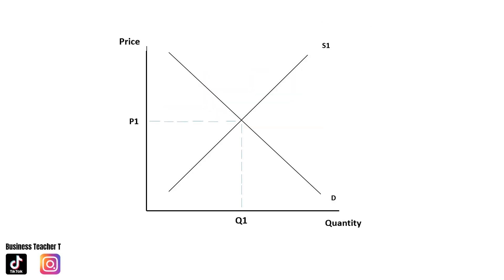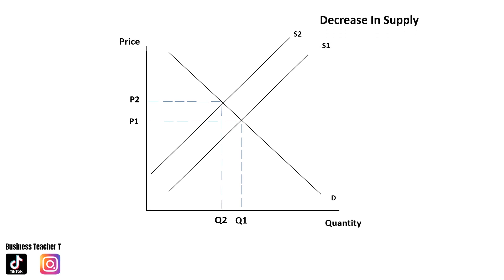For a decrease in supply, we start off with the X as we do with any demand and supply diagram — it makes it simpler and you still get marks for it. We're focusing on the supply curve, so we bring in the new supply curve shifted to the left and label it S2. We draw the new equilibrium and label it P2 and Q2. That shows a decrease in supply.